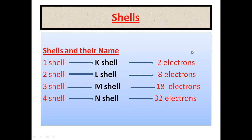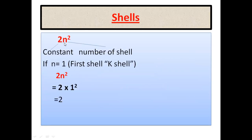How can we calculate the maximum number of electrons in different shells? We have a formula: 2n², used to calculate the maximum number of electrons in different shells. Here 2 is a constant and n represents the shell number. For the first shell, n equals 1, so 2n² equals 2 × 1² equals 2. So the first shell has a maximum of 2 electrons.